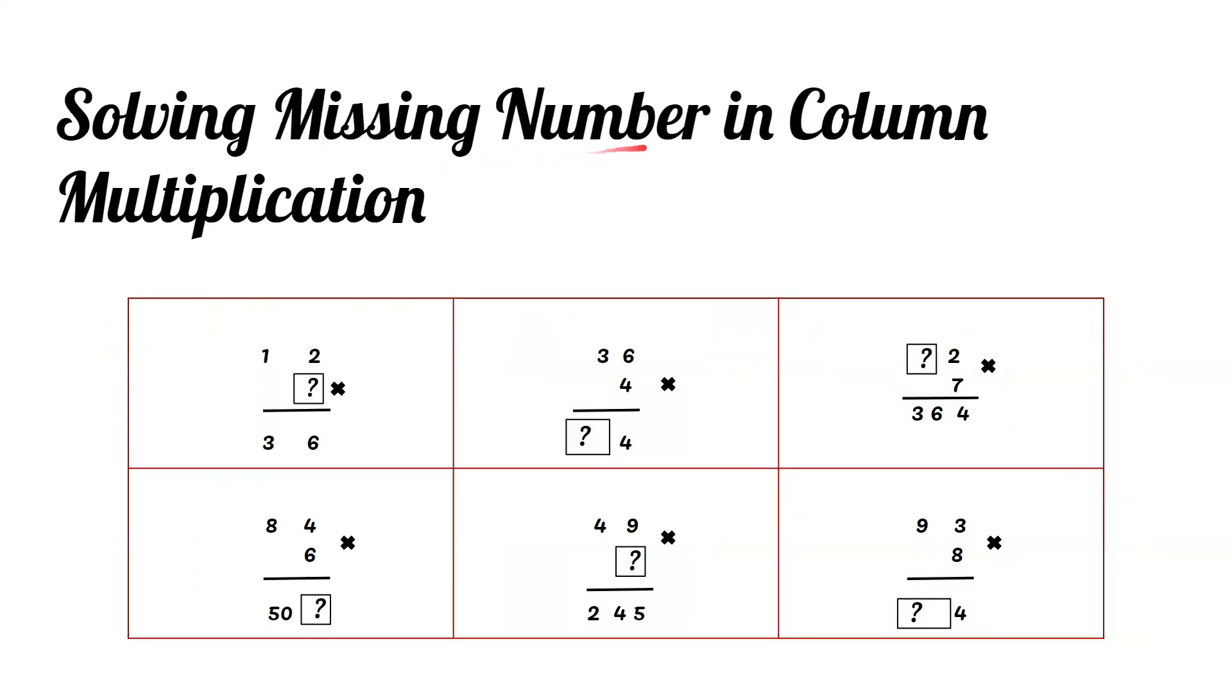Solving missing number in column multiplication. 2 times what equals 6? 2 ones are 2, 2 twos are 4, 2 threes are 6, so the answer must be 3.